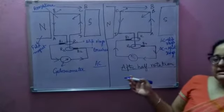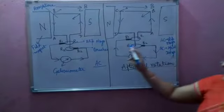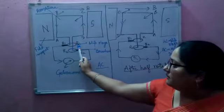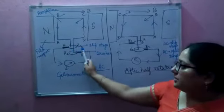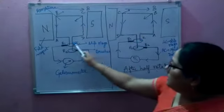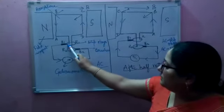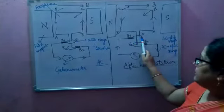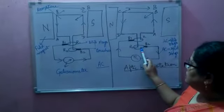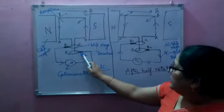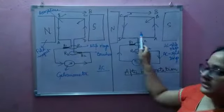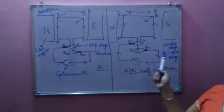All the working principle is the same. In this case, arm AB will move inside this ring during rotation, and arm CD will rotate on the other side. After rotation it will come like this — AB moves, and then after half rotation it will come here. CD initially was here, and when the coil rotates it will come around, and after half rotation it will be on this side. This is all the working of the AC generator.